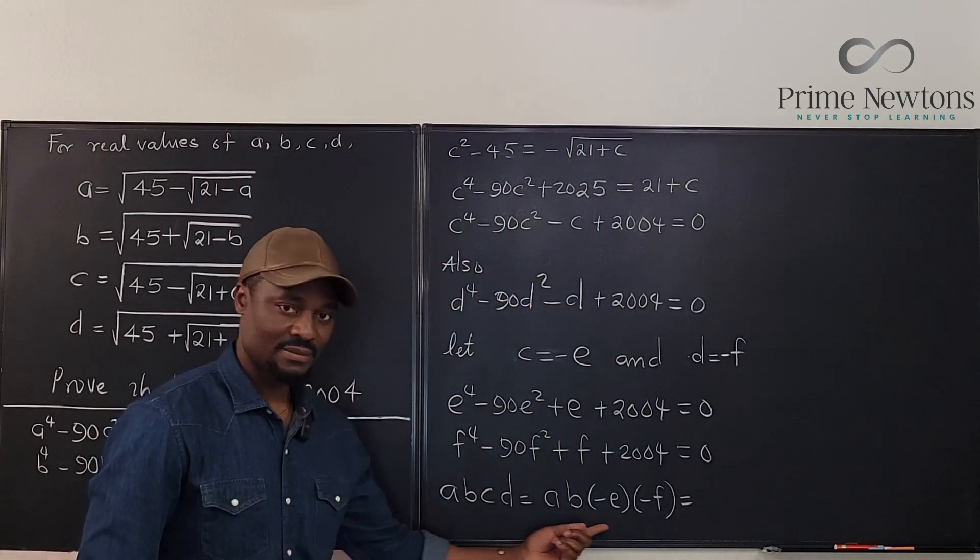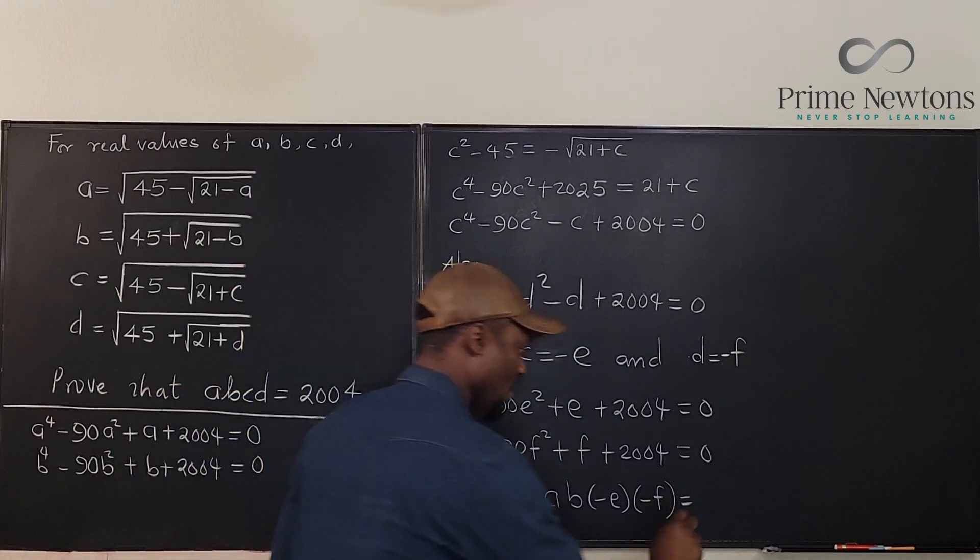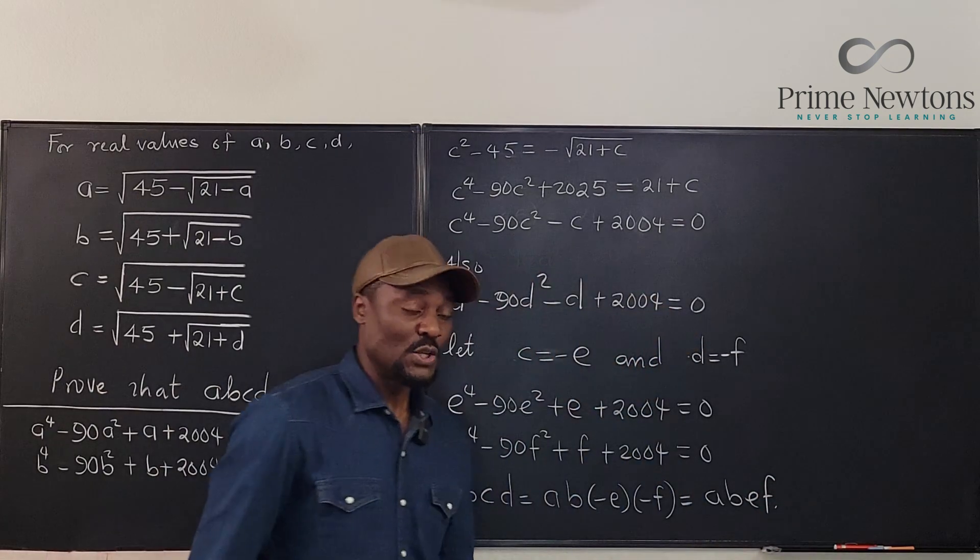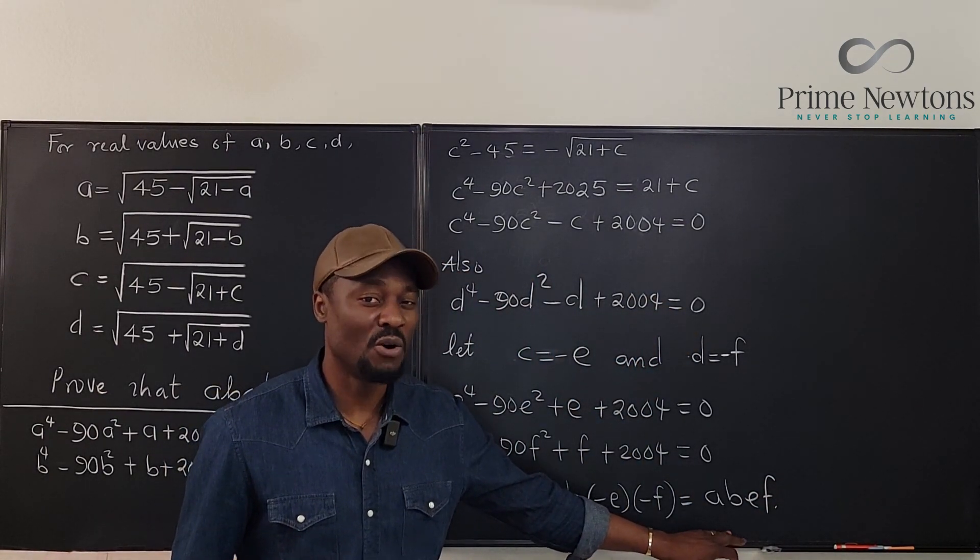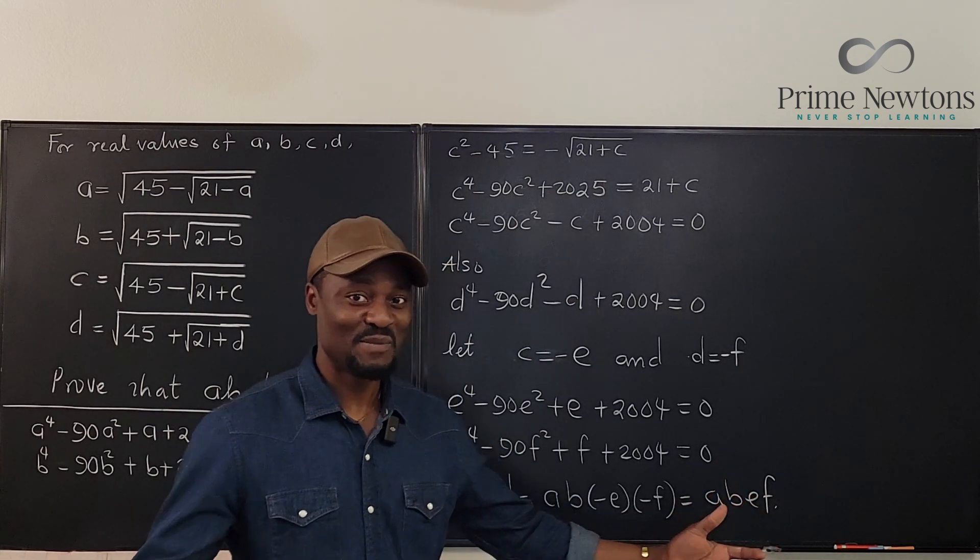C will be negative E and D will be negative F. Okay? That way it's easier for us to see that here. So it's going to be times negative E times negative F, which is the same thing. Look, the product A, B, C, D will be this which is equal to A, B, E, F.